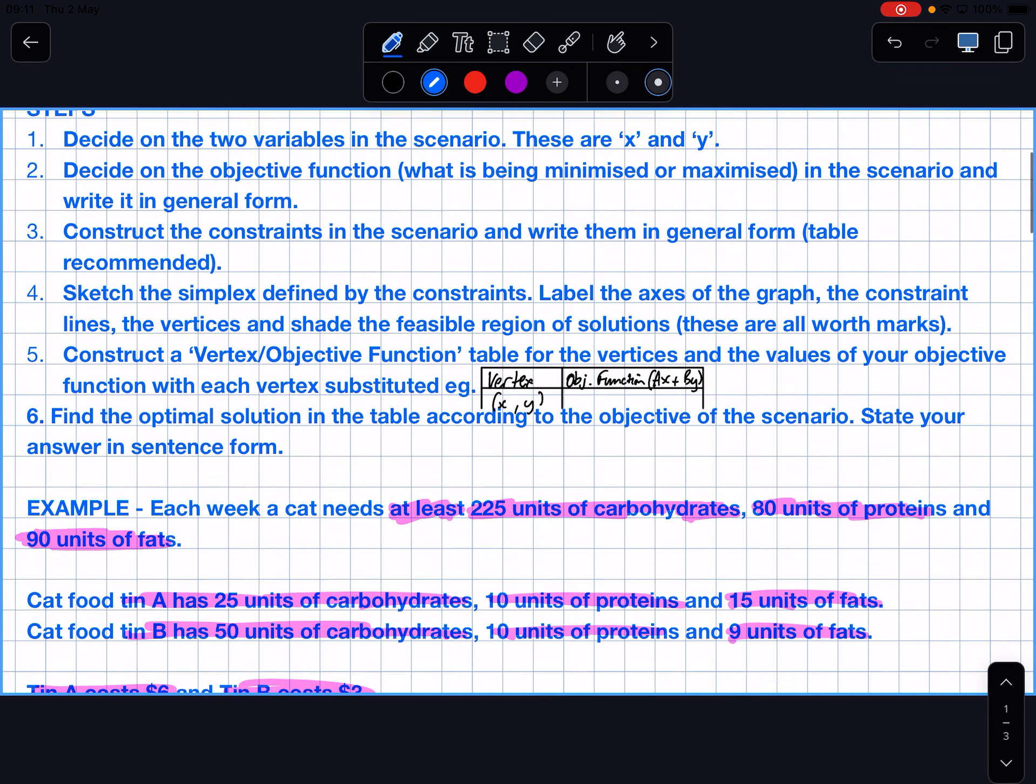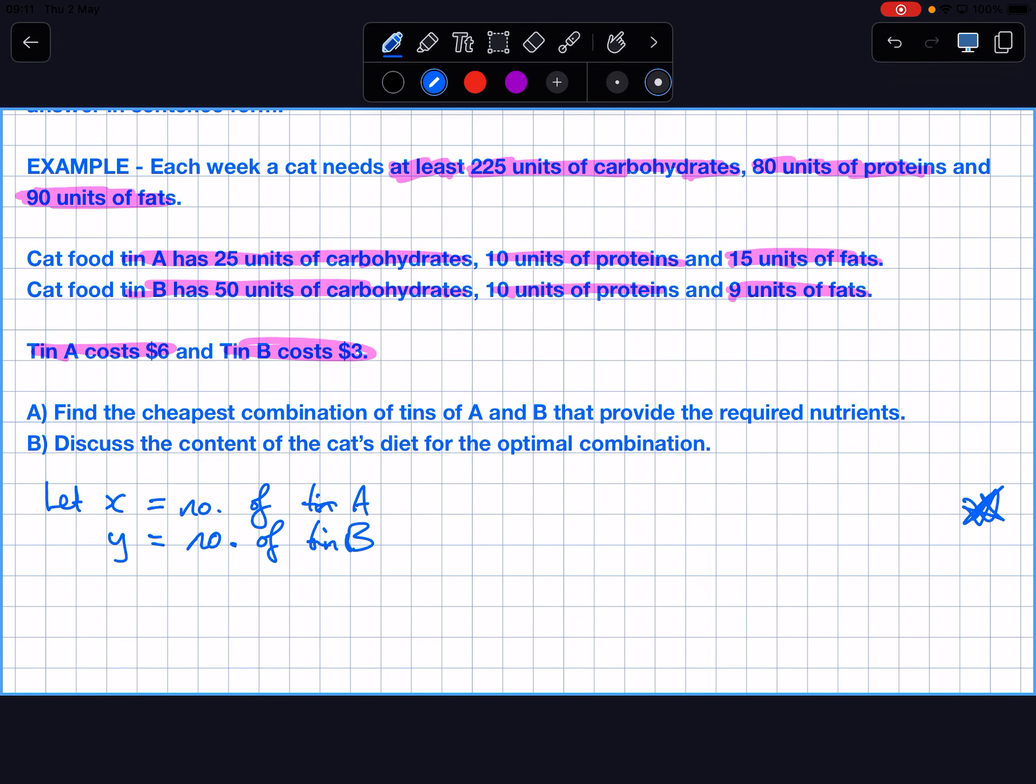Step two, decide on the objective function. In the question, what am I trying to do? What is the word here that suggests that I'm minimizing? Cheapest. Minimizing cost. So my objective function will be, how much does tin A cost? 6X plus, how much does tin B cost? 3Y. That is my objective function. It's what I'm trying to minimize.